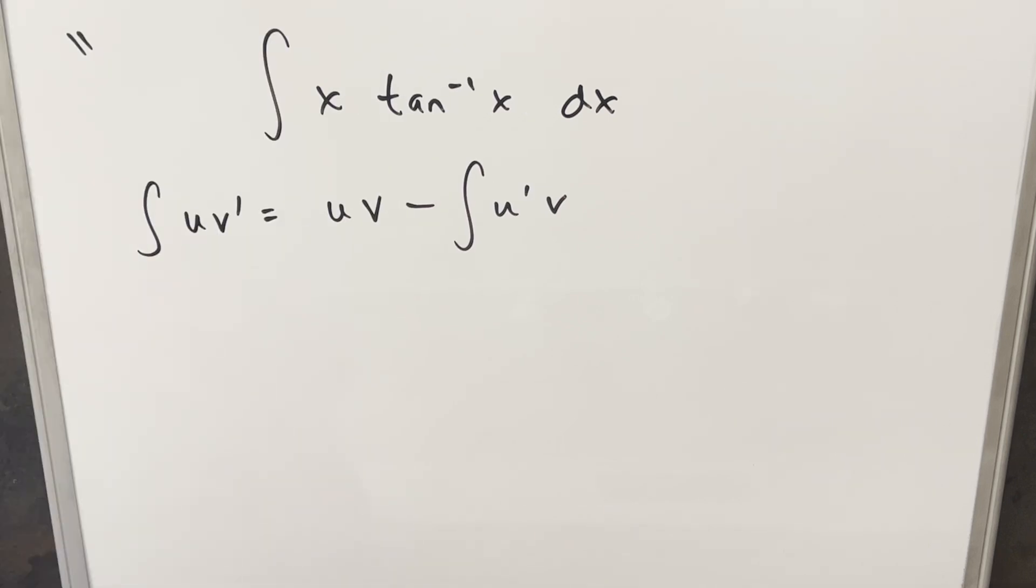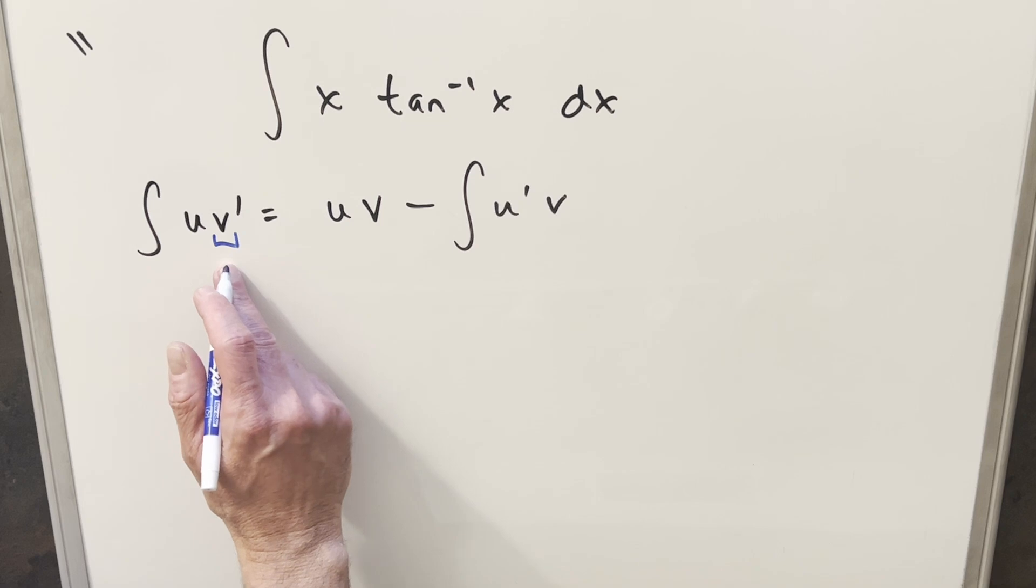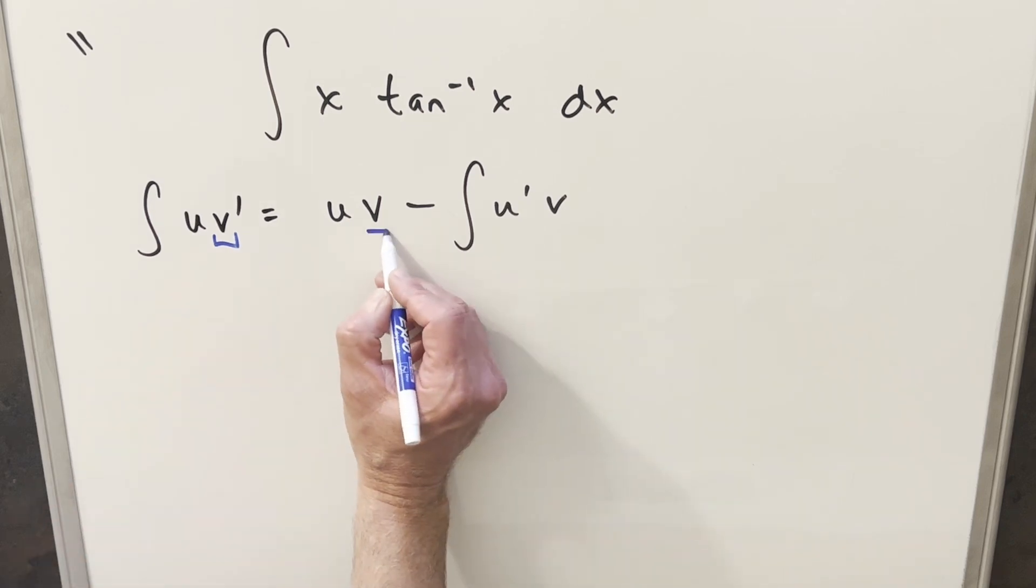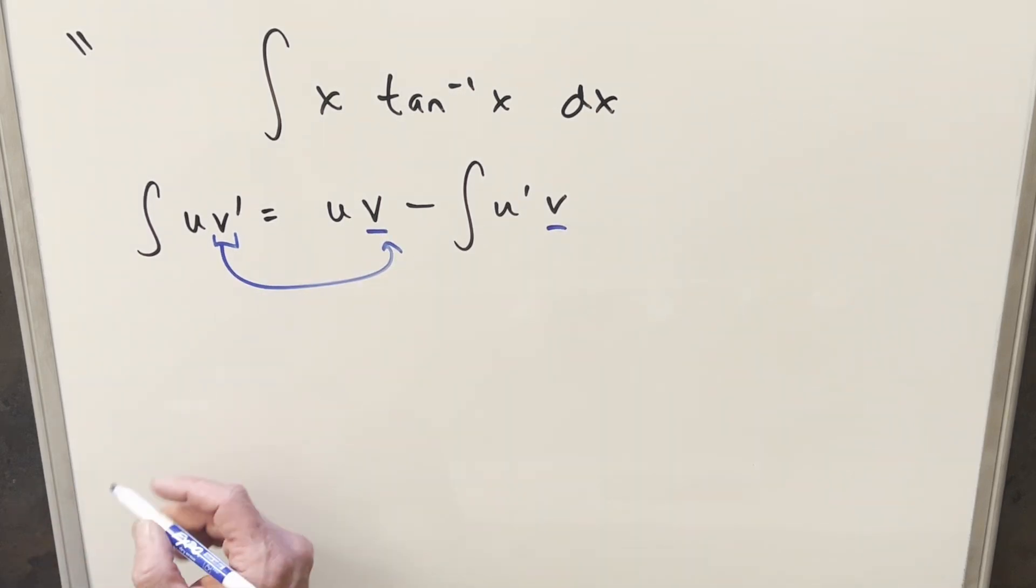So I thought I'd revisit this technique and go over how it works. Okay, so we have our integration by parts formula here on the board and the thing I want to point out is in our original problem, we have something that we're calling a derivative like a v prime and then in order to find v to go from here to here, we're actually taking an integral.